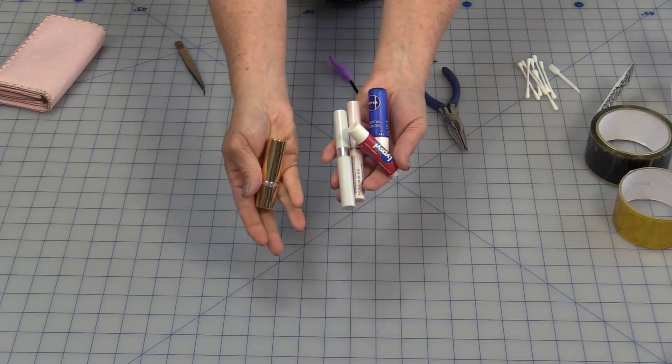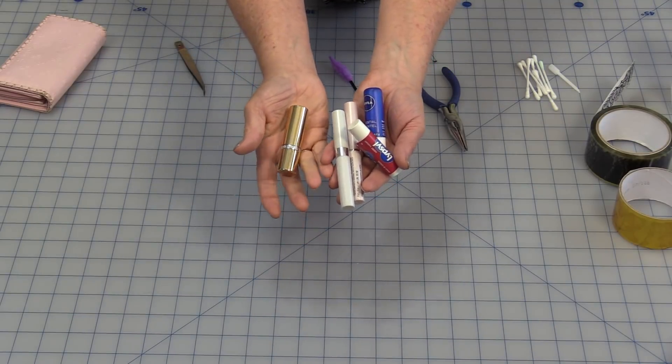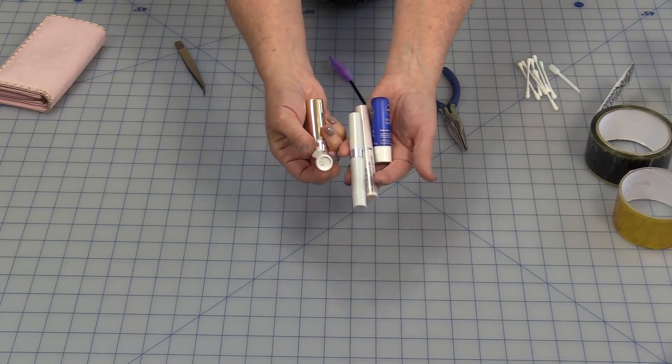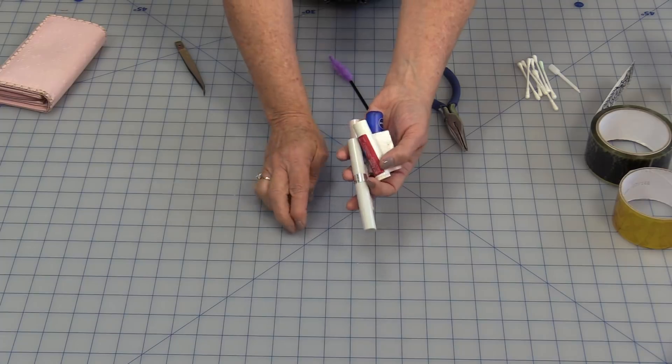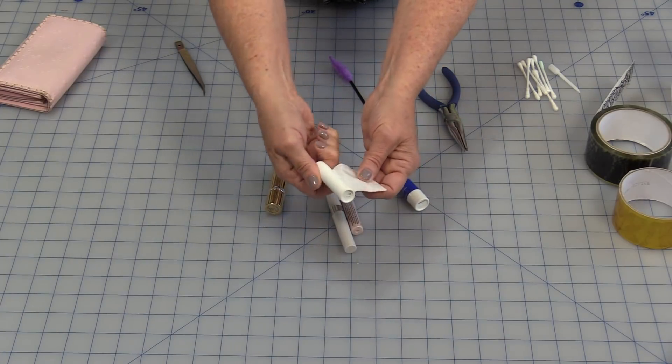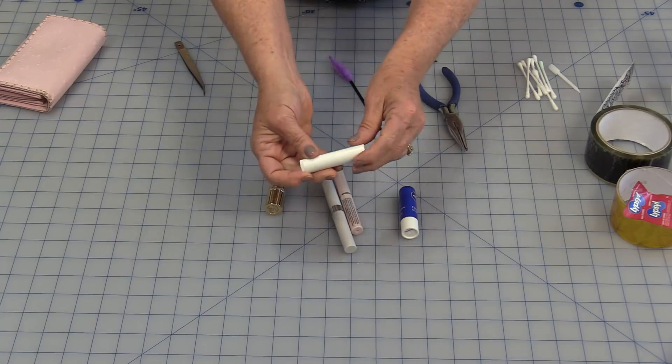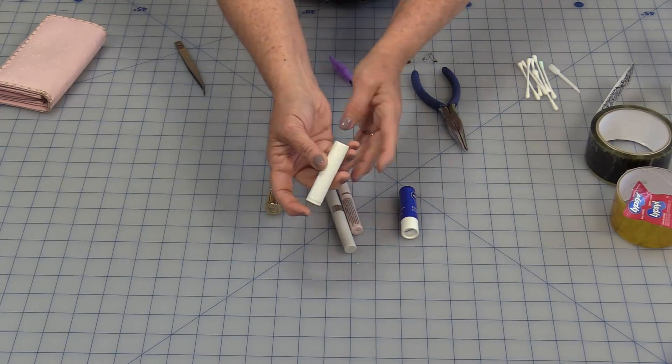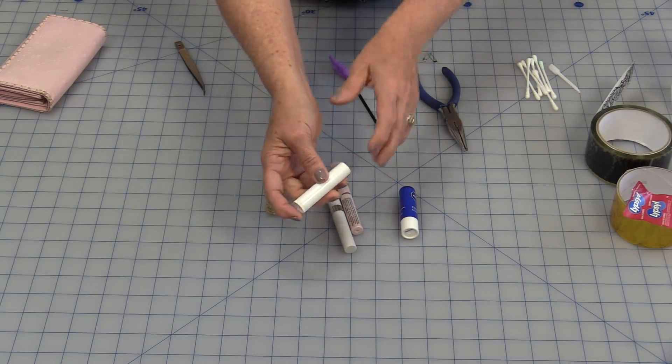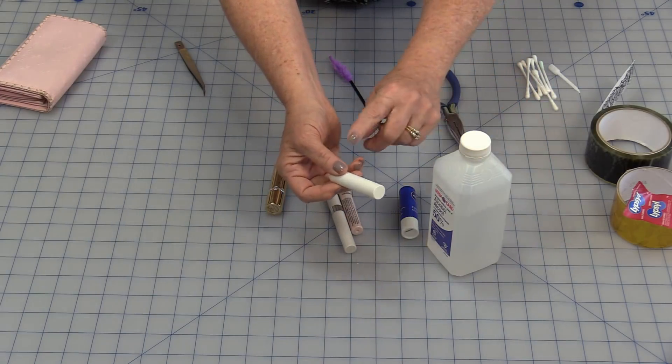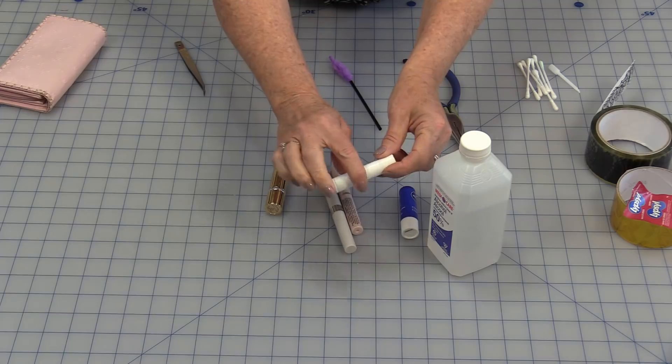Using empty lip gloss and lipstick containers work great. So what we're going to need are some empty lip gloss containers. If we can take the labels off, that's great. And to clean them, start with using a makeup remover and then just use alcohol and that alcohol will help take any of the grease off that's inside.